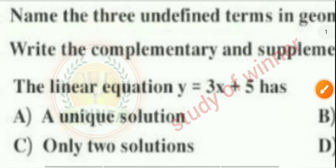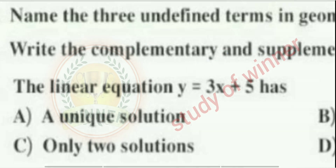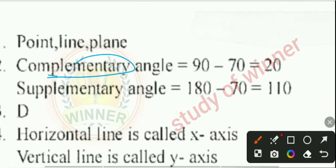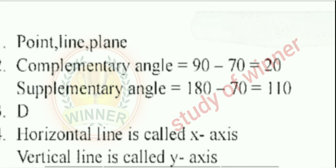Second question: Write the complementary and supplementary angle of 70 degrees. Answer: Complementary angle = 90° − 70° = 20°. Supplementary angle = 180° − 70° = 110°.